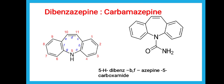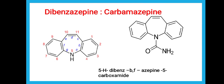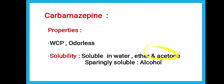So it is B,E,F-azepine. Dibenz[B,E,F]azepine is the parent nucleus, and at the 5th position of the dibenzazepine ring there is a hydrogen on the nitrogen. So this is 5H-dibenz[B,F]azepine, and at the 5th position there is a carboxamide group.